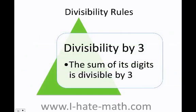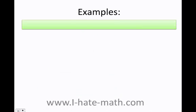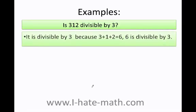Let's learn the divisibility rule of 3. The sum of the digits is divisible by 3. For example, 312: how do I know if this number is divisible by 3? I just add the digits — 3 plus 1 plus 2 — and I get 6. As you can see, 6 is divisible by 3 because 6 divided by 3 is 2. Therefore, if you divide this number by 3, you're going to get a number with no remainder.